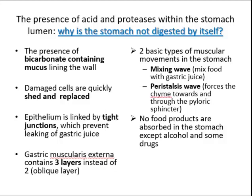The answer is the presence of a bicarbonate-containing mucous lining on the wall — a thick coating. Damaged cells are quickly shed and replaced. The epithelium is linked by tight junctions which prevent leaking of gastric juice. The gastric muscularis externa contains three layers rather than the usual two. Deep to the circular layer is the oblique layer, which allows the stomach to churn, mix, and pummel food.